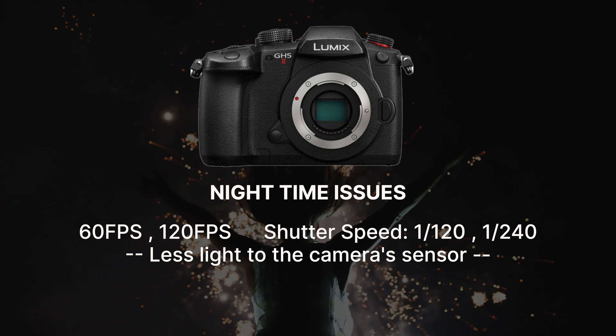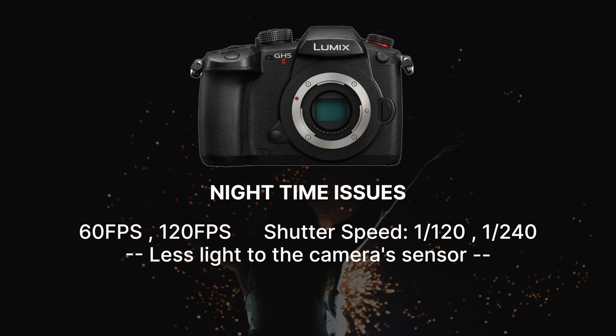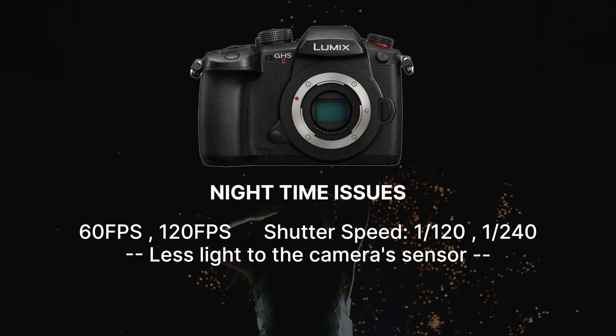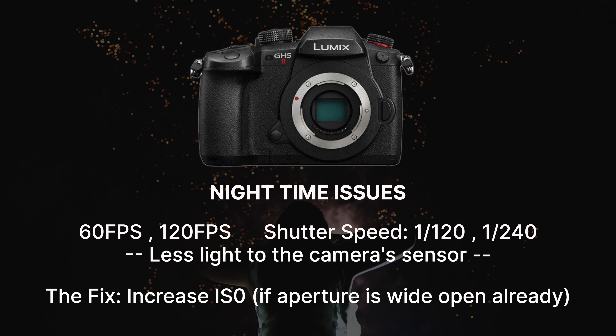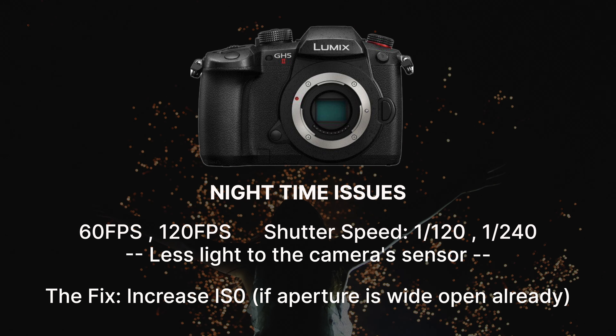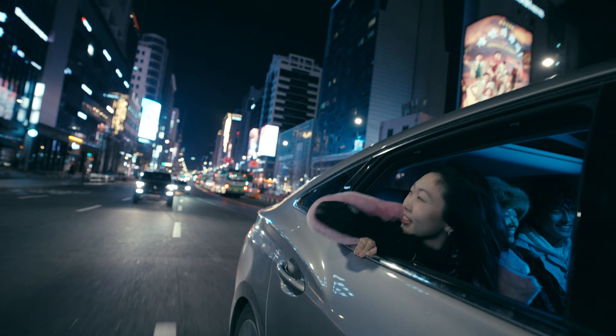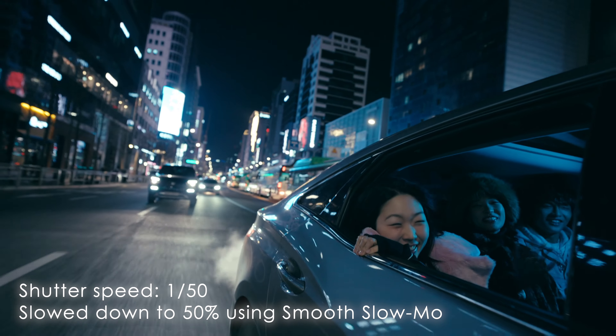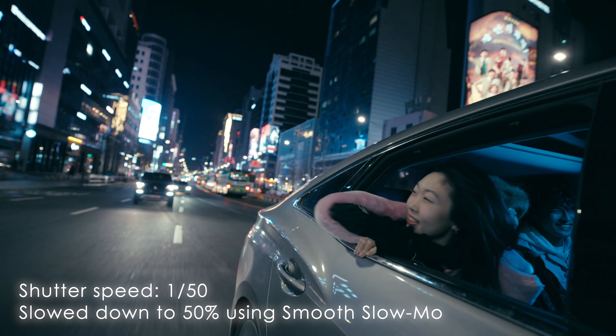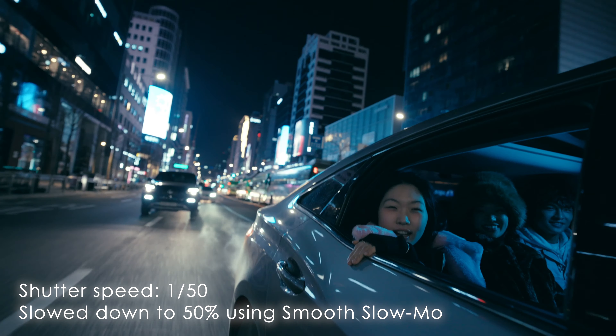Another instance of when smooth slow-mo can come in handy is if you want slow motion footage at night but your camera doesn't have great low light capabilities. If you shoot at 60 or 120 frames a second at night, your shutter speed should be double that, which means less light gets to your sensor, so you have to bump up your ISO — resulting in a grainy, noisy image. The solution is to shoot at a normal frame rate like 24 or 25 fps, letting in more light without bumping ISO, and then adjust in post using smooth slow-mo. This gives you that much-needed flexibility in post.